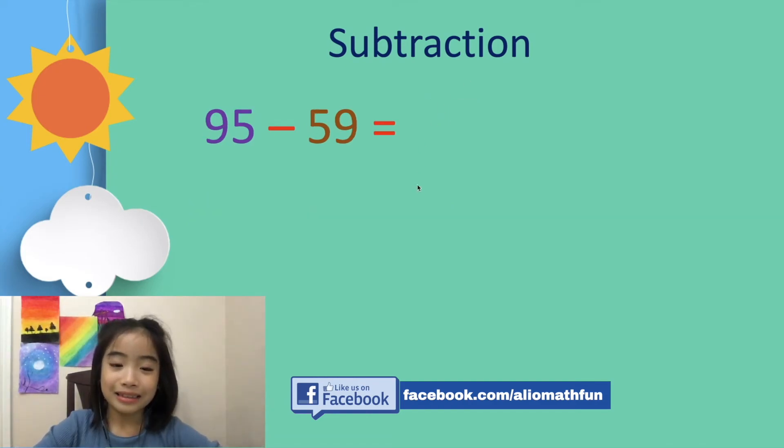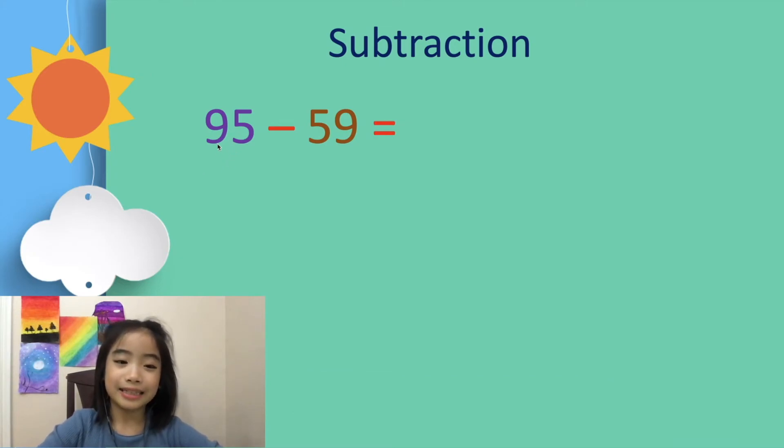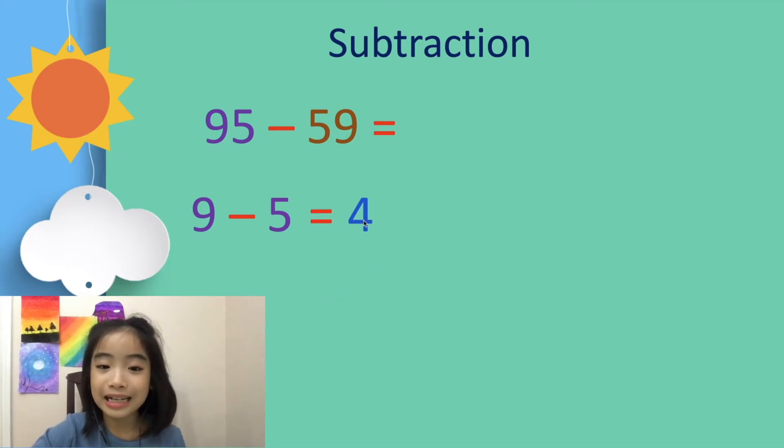Now, let's look at another example. It's 95 minus 59. First, we have 9 minus 5 equals 4. Then, it's 4 times 9 equals 36. And the answer is 36. That was really, really quick and also fun.